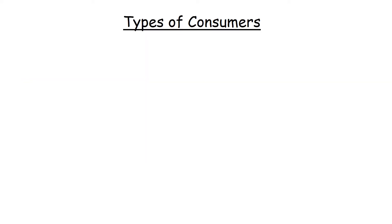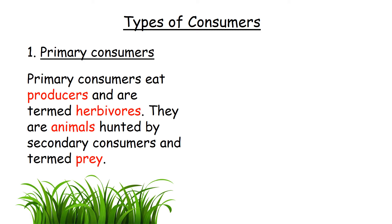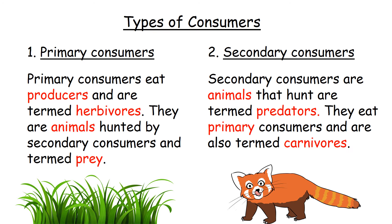Types of consumers: Primary consumers eat the producers and are termed herbivores. They are animals that are hunted by secondary consumers, and they are termed prey. Secondary consumers are animals that hunt their prey — they are termed predators — and they eat the primary consumers, making them carnivores. This will all make more sense when we look at a food chain and you can see each of the consumers in their order.